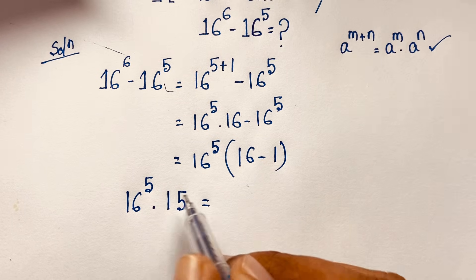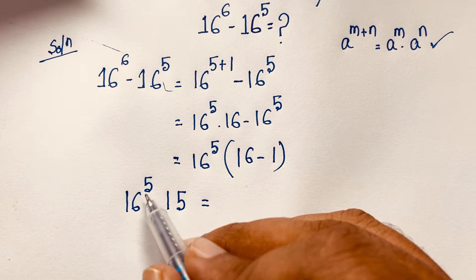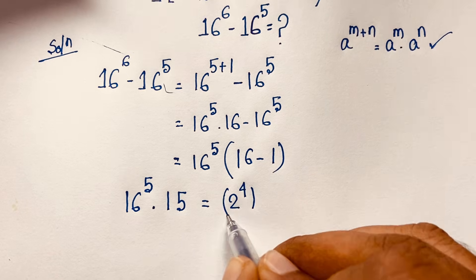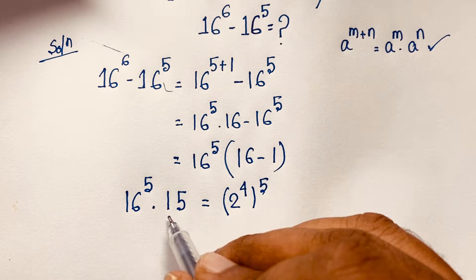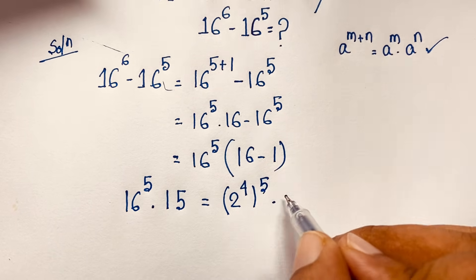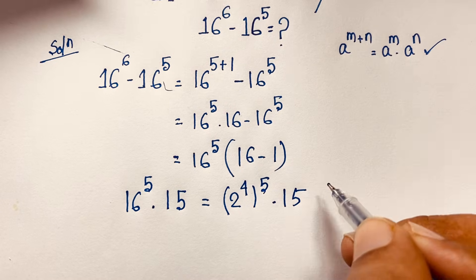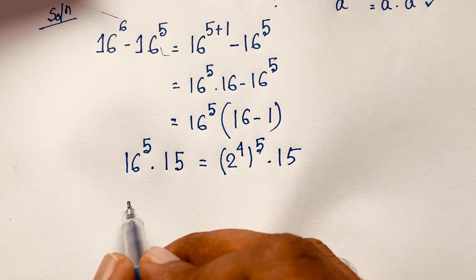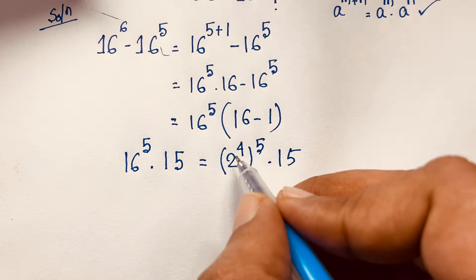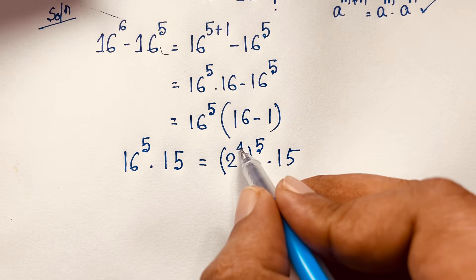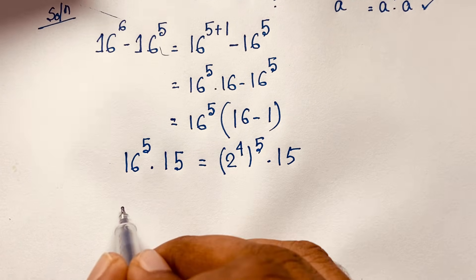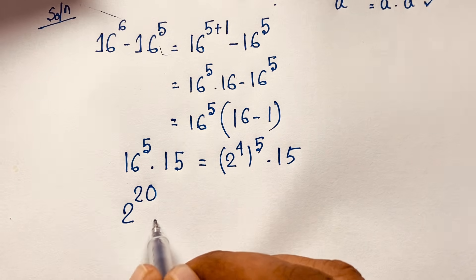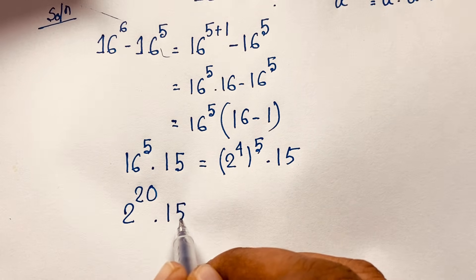Now for 16 power 5: since 16 equals 2 to the power 4, we have 16 power 5 equals 2 to the power 4, all to the power 5. That gives us 2 to the power 20. So the expression becomes 2 to the power 20 times 15.